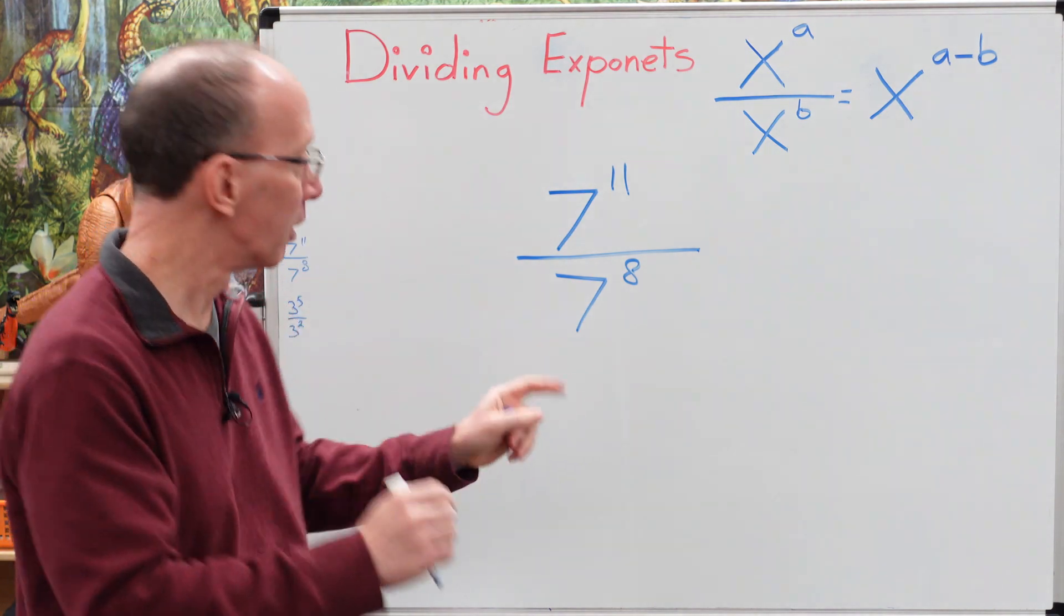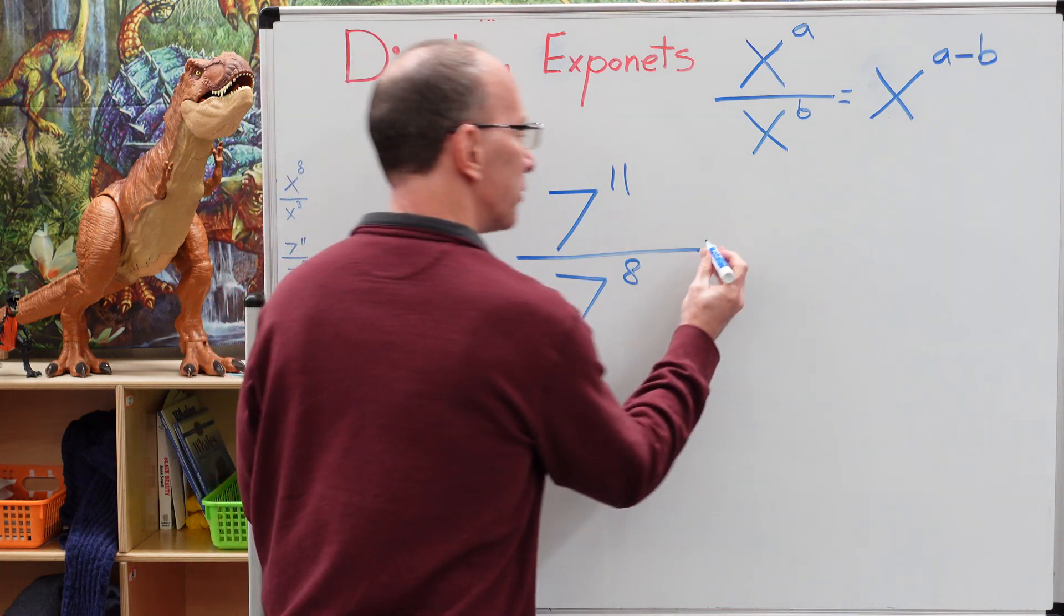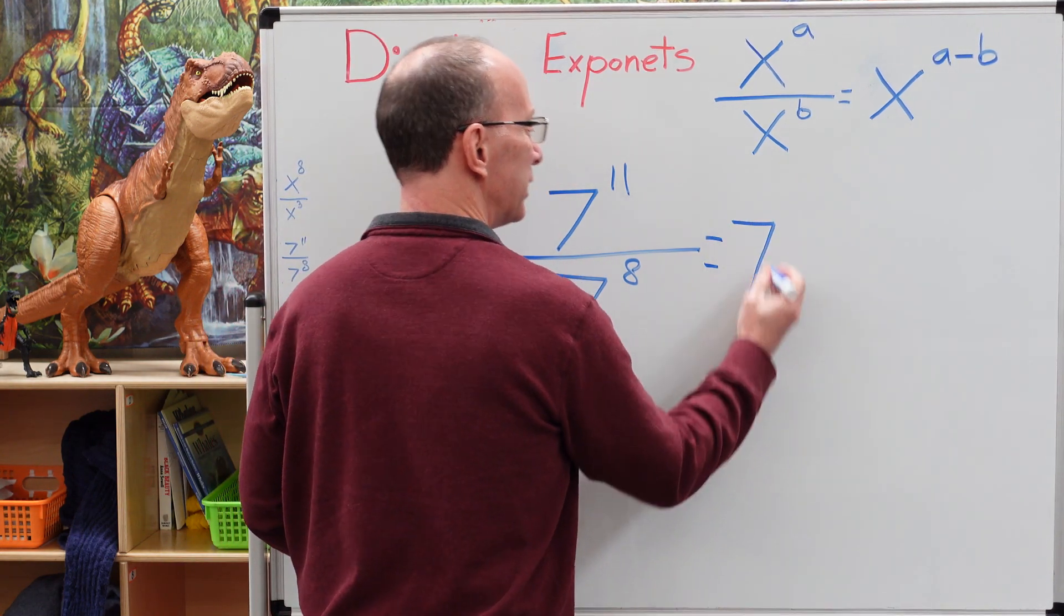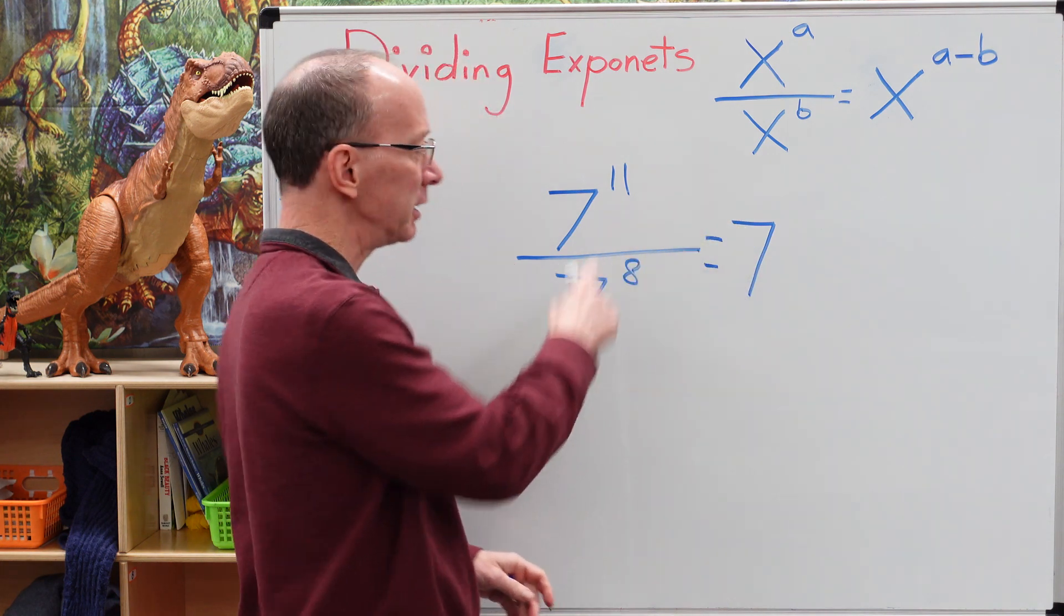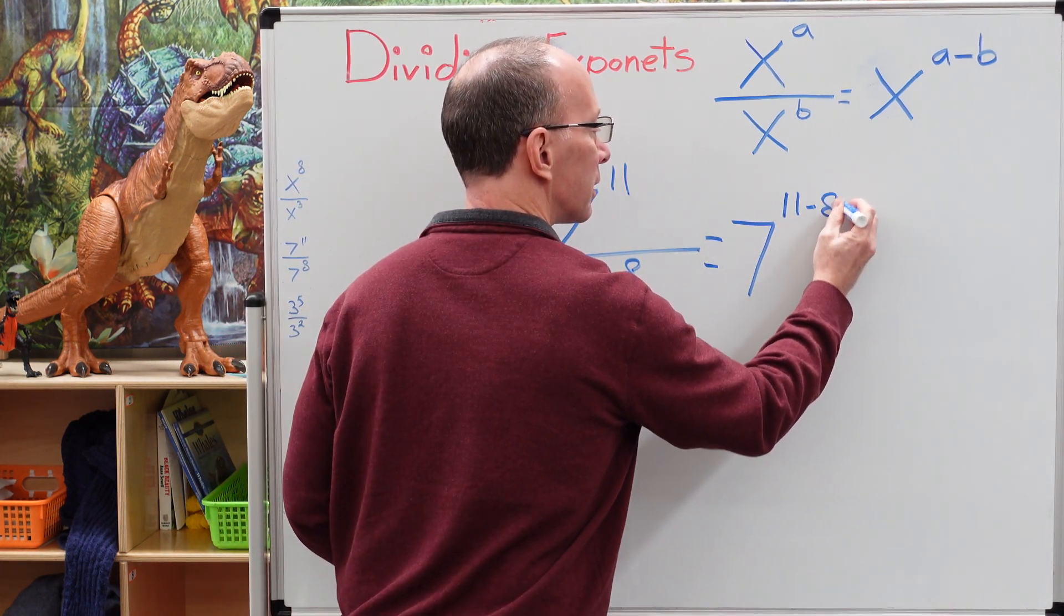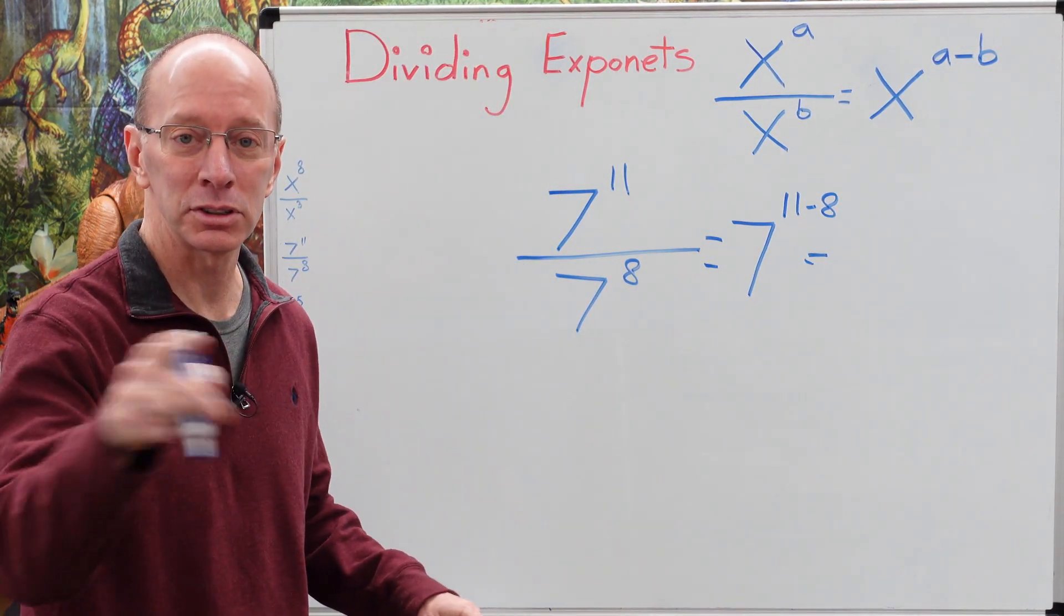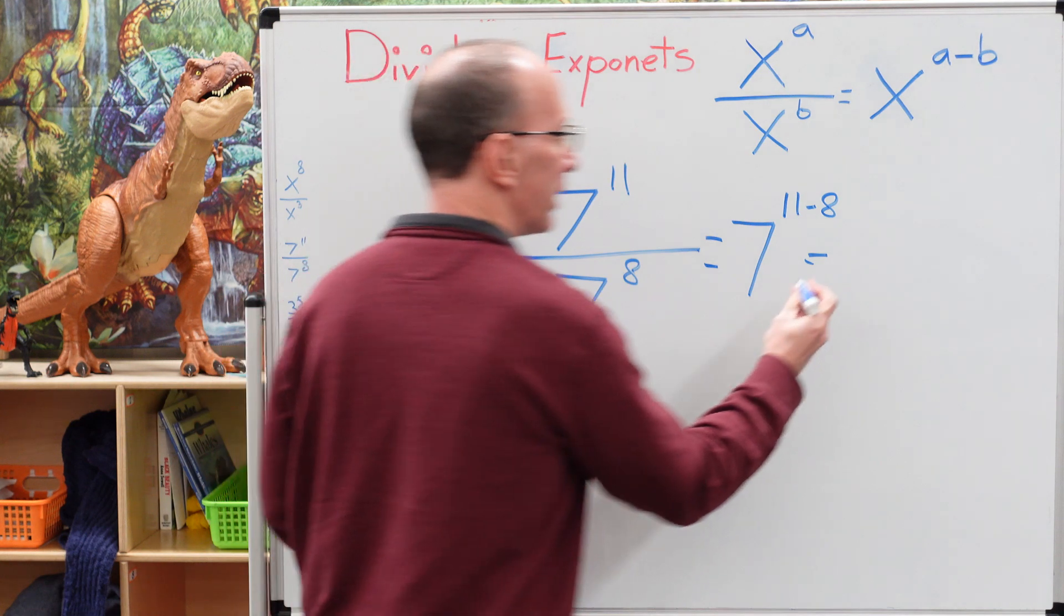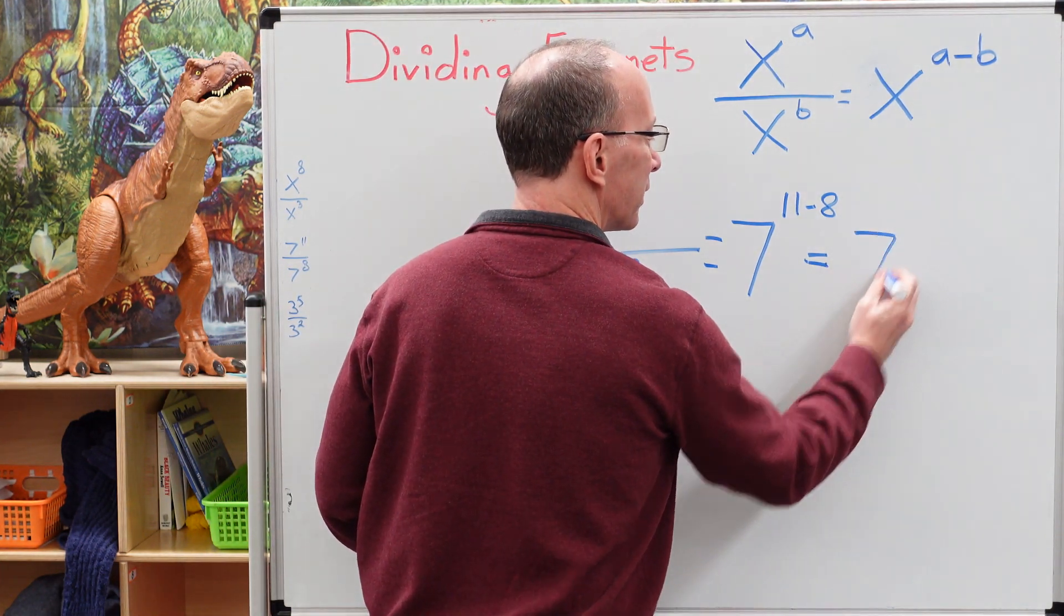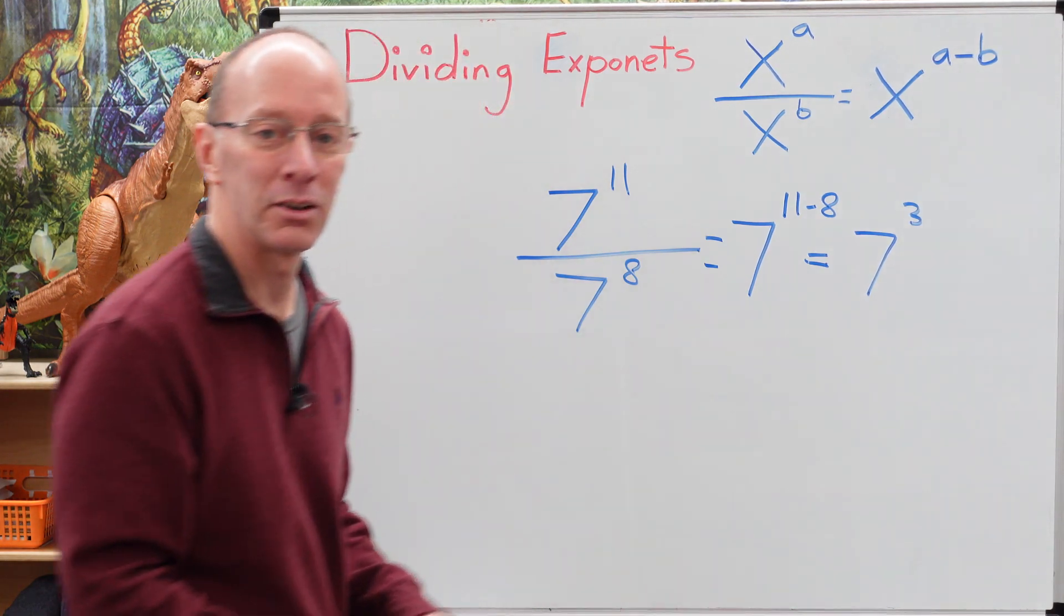Yeah. All right. So then we use our secret formula. So we have 7 and then we have a minus b. So 11 minus 8. And what is 11 minus 8? One, two, three. Yeah. So we have 7 to the third power.